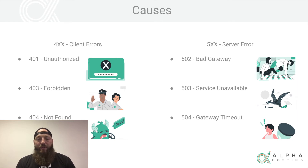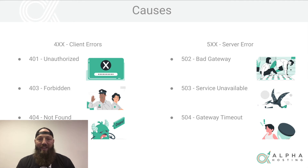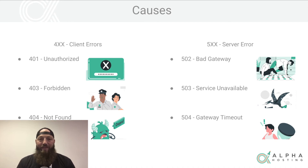A 503 service unavailable means there are so many requests going into the server that PHP no longer has any workers to provide your browser with a place in line. There's no way to get you in the queue so that the server can process your requests and spit something out on the other end. Think high levels of traffic.